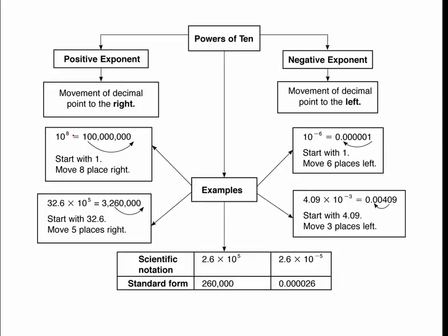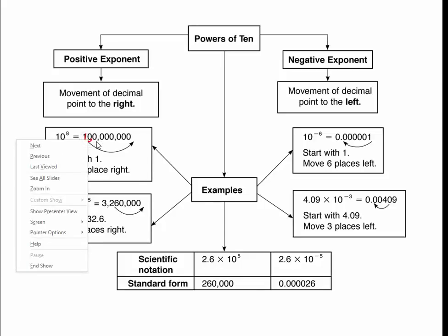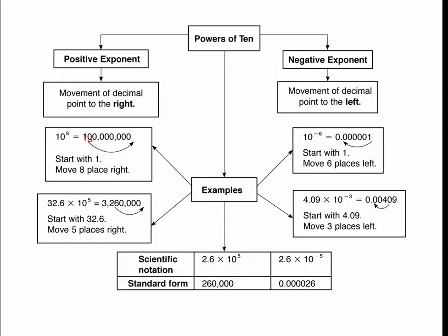For example, 10 to the 8th: we start with a 1. Write down 1 first, and then there's an imaginary decimal after the 1, and then you move it 1 through 8 places to the right. Each of those little bumps that I made have to be filled in with zeros. So that's 10 to the 8th — you move to the right.